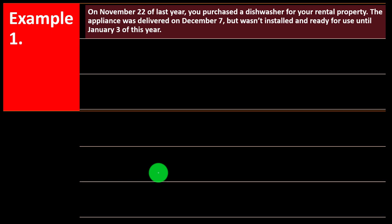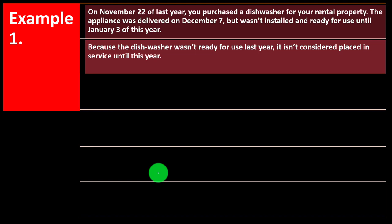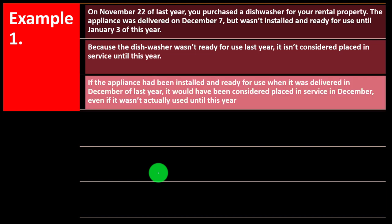Example number one: on November 22nd of last year, you purchased a dishwasher for your rental property. The appliance was delivered on December 7th, but wasn't installed and ready for use until January 3rd of this year. Because the dishwasher wasn't ready for use last year, it isn't considered placed in service until this year. However, if the appliance had been installed and ready for use when it was delivered in December of last year, it would have been considered placed in service in December, even if it wasn't actually used until this year.